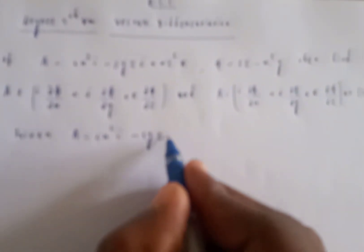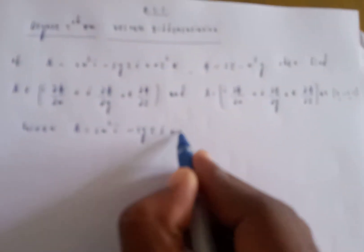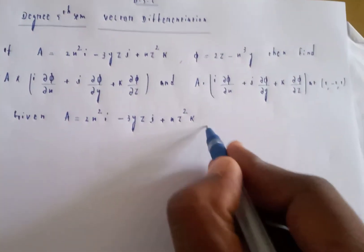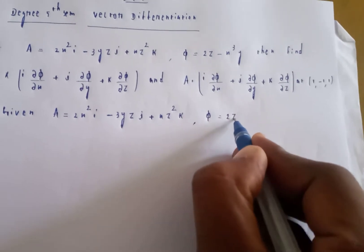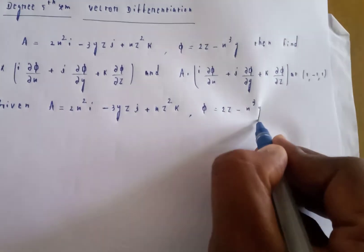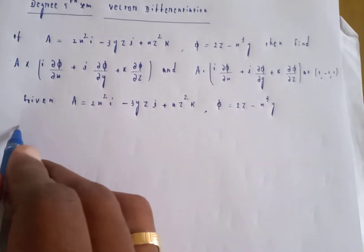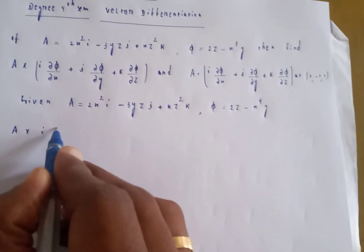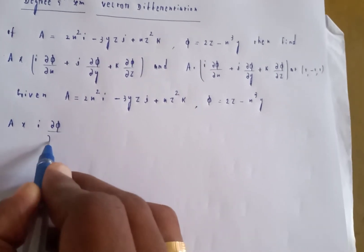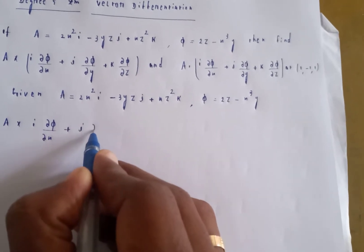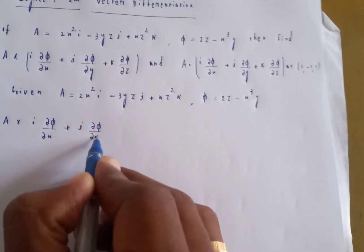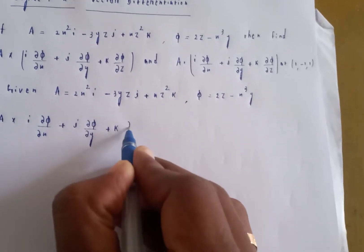Given: A equals 2x² i minus 3yz j plus xz² k. And phi equals 2z minus x³y. We need to find A cross the vector: i of ∂φ/∂x plus j of ∂φ/∂y plus k of ∂φ/∂z.